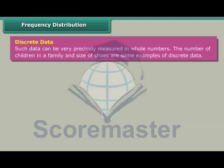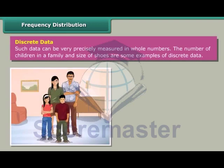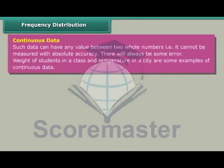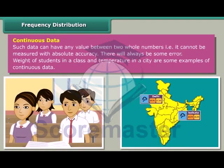Discrete data can be very precisely measured in whole numbers. The number of children in a family and size of shoes are some examples of discrete data. Continuous data can have any value between two whole numbers — that is, it can be measured with absolute accuracy, though there will always be some error. Weight of students in a class and temperature in a city are some examples of continuous data.